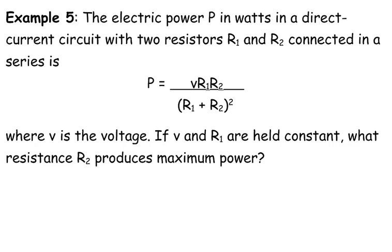Here's what I'm thinking in my head. V and R1 are held constant, so we don't know what they are, we just know that they are constant values. So even though they are variables, we treat them like they were a number.